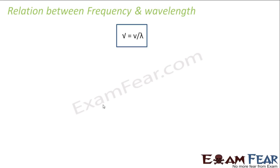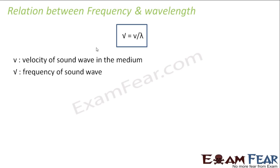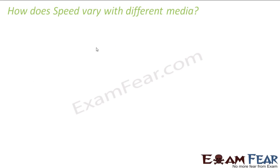The relationship between frequency and wavelength is: ν = v/λ, where v is the velocity of the sound wave in the medium, ν is the frequency of the sound wave, and λ is the wavelength. In one medium, for all different frequencies, speed will remain the same because as frequency changes, wavelength also changes accordingly.